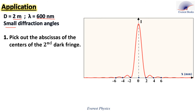Number one: pick out the abscissas of the centers of the second dark fringe. Look at the figure. 2 represents the abscissa of the first dark fringe on the right side, and 4 is the abscissa of the center of the second dark fringe on the right side. Minus 2 is the abscissa of the center of the first dark fringe on the left side, and minus 4 is the abscissa of the center of the second dark fringe on the left side. So, the abscissas of the centers of the second dark fringes are plus and minus 4 millimeters.